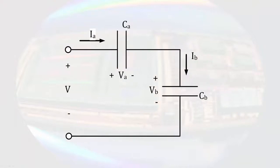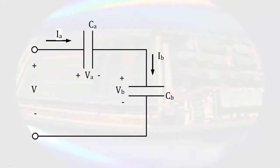Again, let's start by indicating the currents and voltages that are present. If we do a KVL equation around the loop, we see that the voltage divides between the two capacitors.